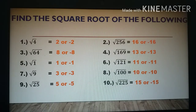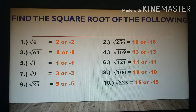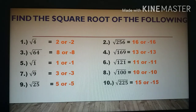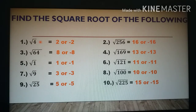Let's find the square root of the following numbers: number 1, square root of 4; number 2, square root of 256; also square root of 64; square root of 169, and so on. The answer for number 1: the square root of 4 is equal to 2 or negative 2 — there are two solutions. Why? Because 2 times 2 gives positive 4, and negative 2 times negative 2 also gives 4.